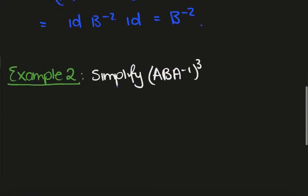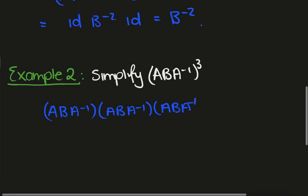Okay, let's do that again. Simplify ABA inverse cubed. So this doesn't necessarily rely on the above fact, but let's just figure it out. So we're going to have ABA inverse times ABA inverse times ABA inverse. Let's write that a little neater.